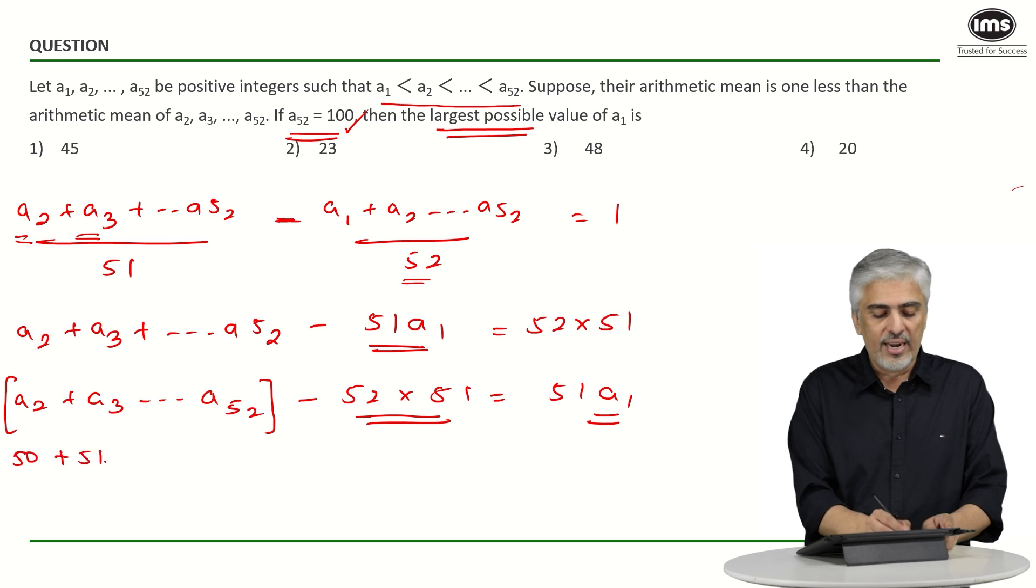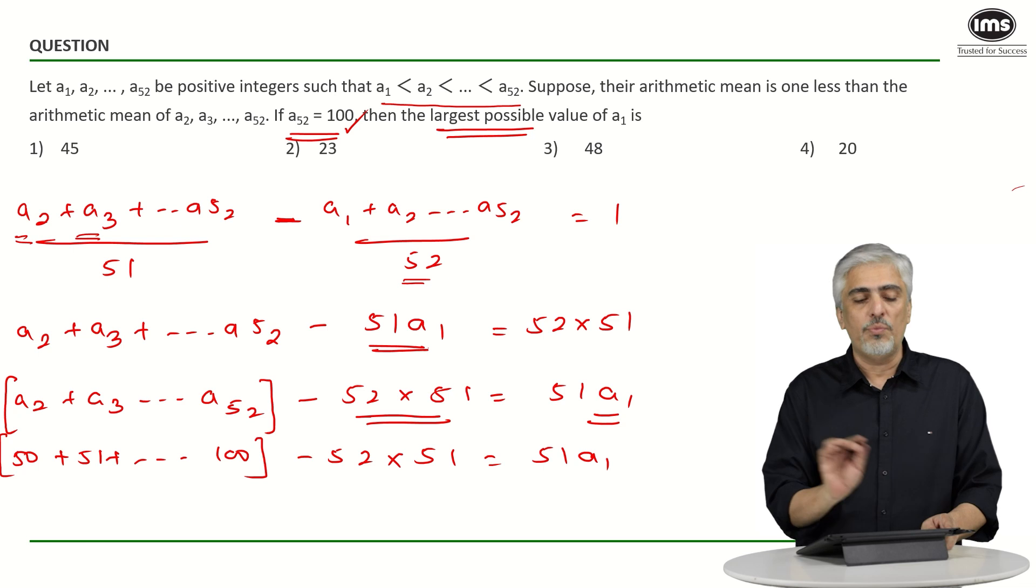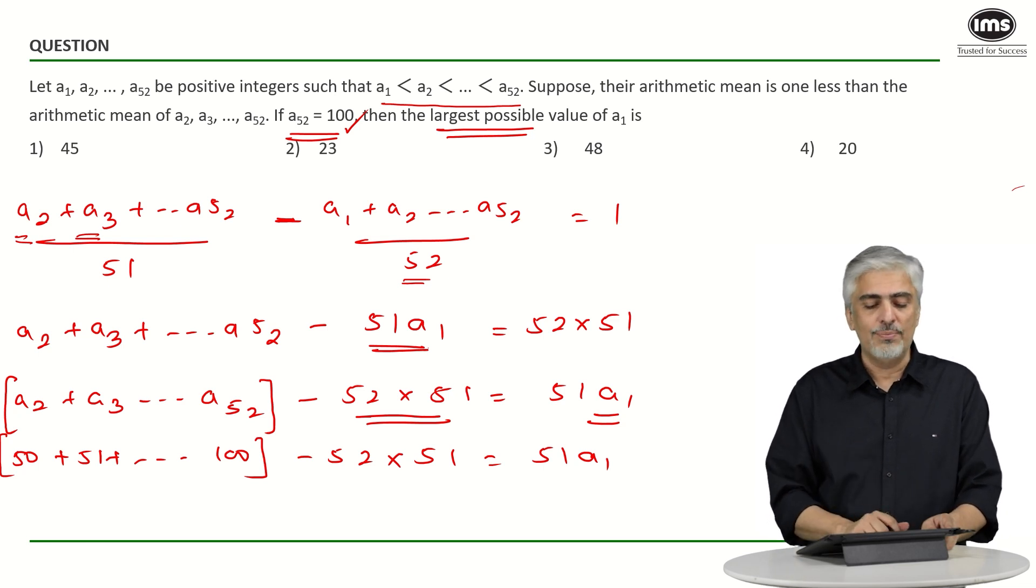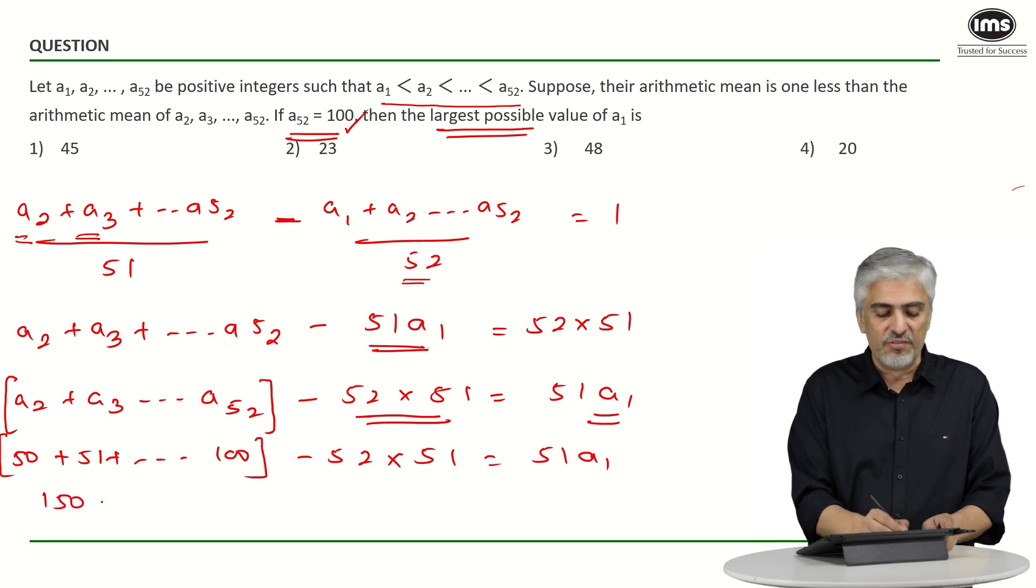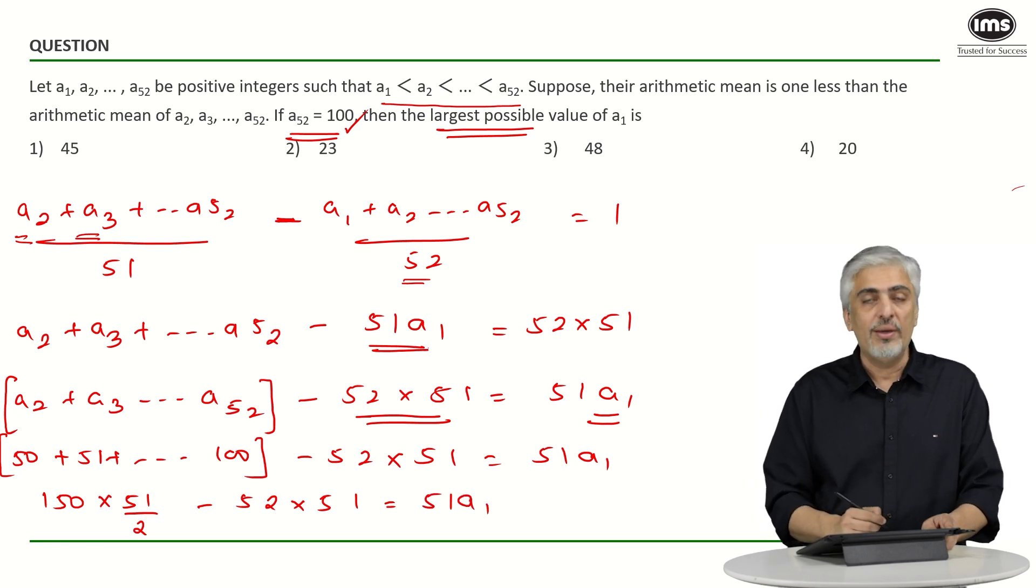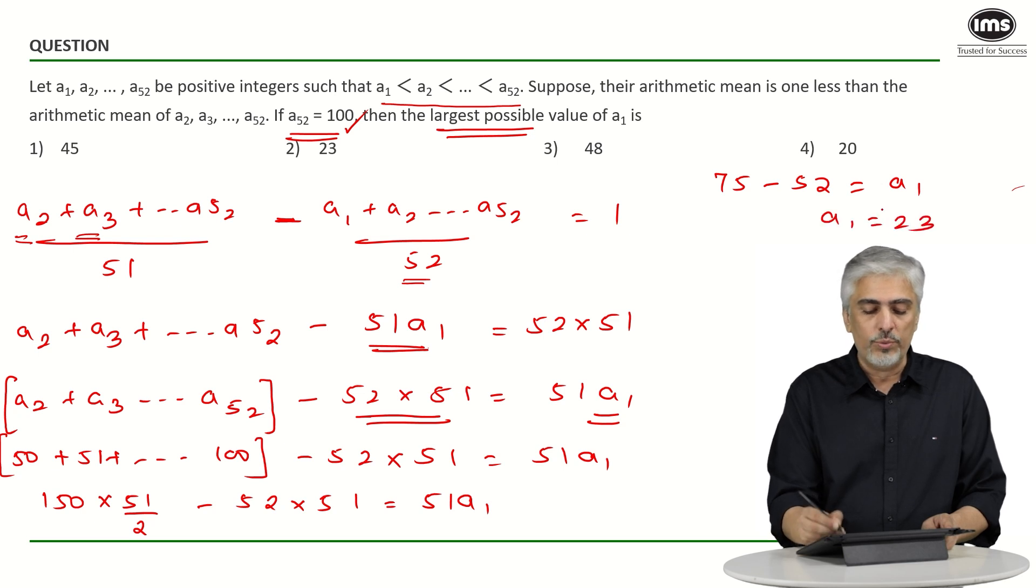We want 52 terms, which means this first term will be 50 and the last term will be 100 minus 52 into 51 is equal to 51 a1. So this is what we have got. Now solving this also is pretty simple if you solve it smartly. These are consecutive terms, so it is an arithmetic progression. What is the formula to solve an AP? First term plus last term into n upon 2. So 50 plus 100, first term plus last term is 150, and there are 51 terms, so into 51 upon 2 minus 52 into 51 is equal to 51 a1. What do you notice? There is a 51 everywhere, so 51 cuts out. 150 divided by 2 is 75 minus 51 is cut out, so minus 52 is equal to a1, and a1 is 23, which is the second option.